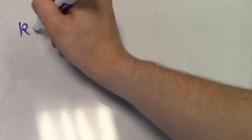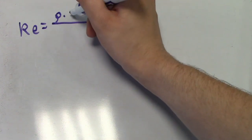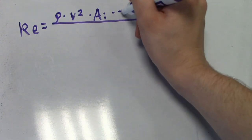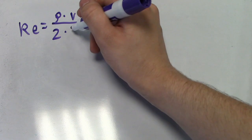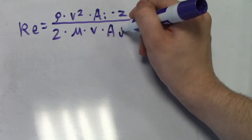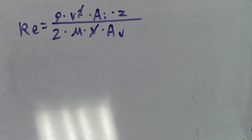We can calculate Reynolds number by dividing our inertial force equation by our viscous force equation. In doing that, we have rho times v squared times a sub i times z divided by 2 times mu times v times a sub v. One of our velocities on the top and bottom cancel. We can also cancel our two areas, but this requires a bit of discussion.